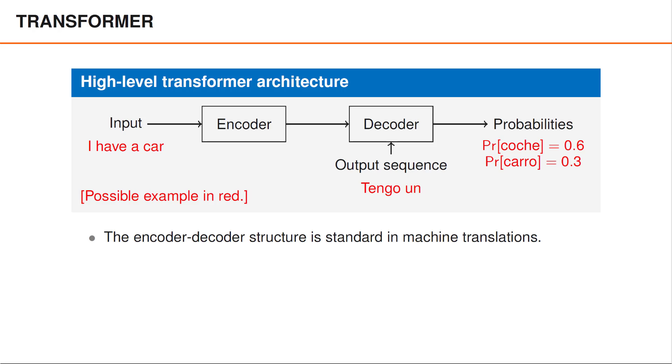We can then use these probabilities to translate one more word. If we select Koche as our next word, we can feed the sequence Tengo un Koche into the decoder, and ask it to compute the probabilities of the next word.